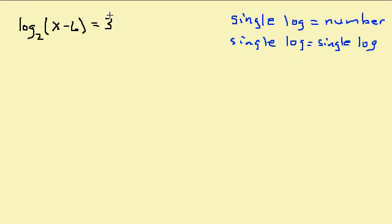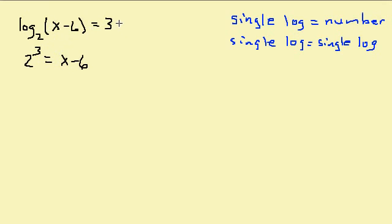We have a single log on the left hand side and a number on the right hand side. When we have a single log equals a number, we want to change this to exponential form. So that's 2 raised to the third equals x minus 6.